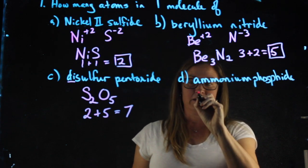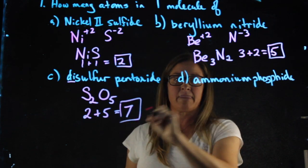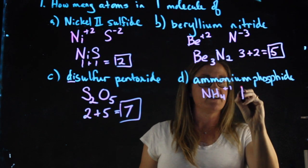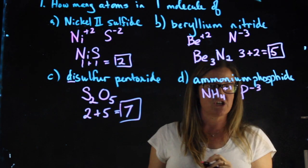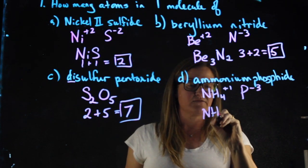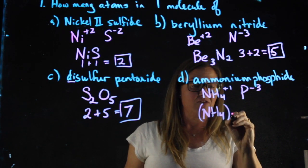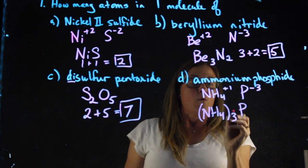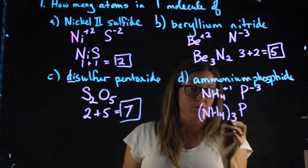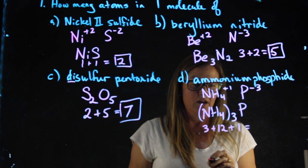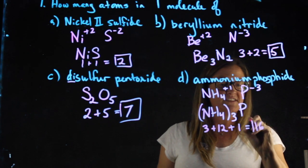Ammonium phosphide. Ammonium is NH4 with a positive one charge. Phosphide is phosphorus with a minus 3 charge. Now when I crisscross I'm going to need parentheses for the ammonium. I'm going to need three ammoniums to balance the charge of this phosphorus. When I have parentheses we distribute: three nitrogens plus 12 hydrogens plus one phosphorus gives me a grand total of 16.